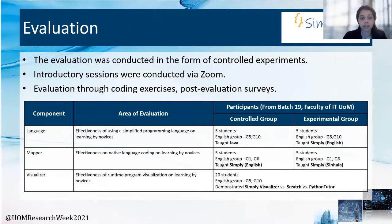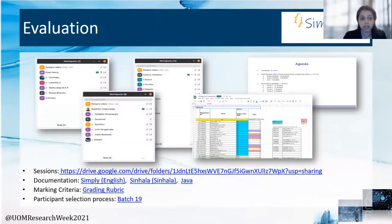A similar experiment was conducted for testing the effectiveness of native language coding, where the control group was asked to answer in Simply English and the experimental group in Simply Sinhala. Both groups had similar levels of English proficiency to prevent any unwanted influences. The visualizer was demonstrated in comparison with similar tools in Scratch and Python Tutor, and results were gathered through post-evaluation surveys. All relevant documentation and coding exercises were provided to students in either English or Sinhala based on the experiment, and marking was done according to a rubric which evaluated results based on accuracy, relevance and overall performance.